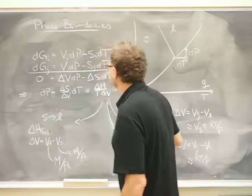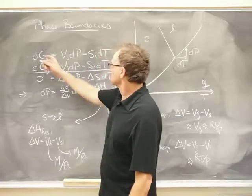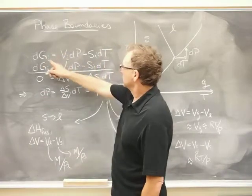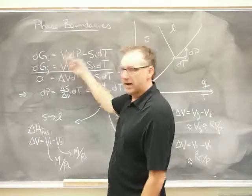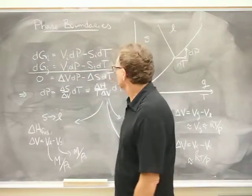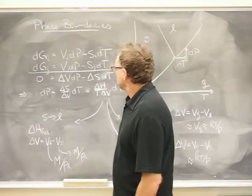Now, we do have an equation that has dp and dt in it, of course. It's the Gibbs differential equation of state and it looks like this. Now, I've labeled two phases i and j. i could be a liquid and j could be a vapor, for example.